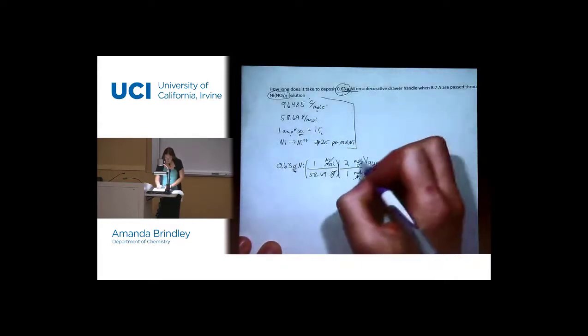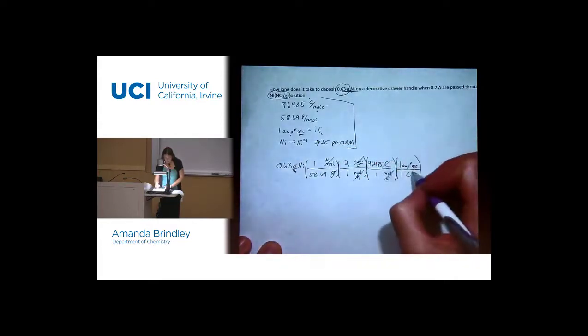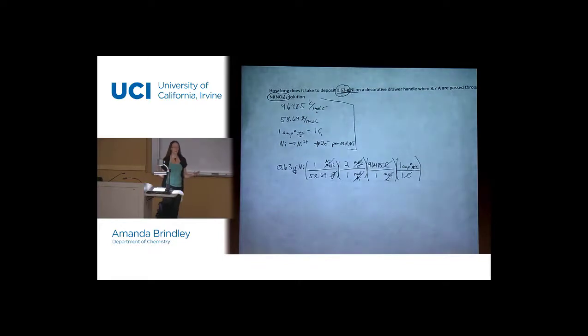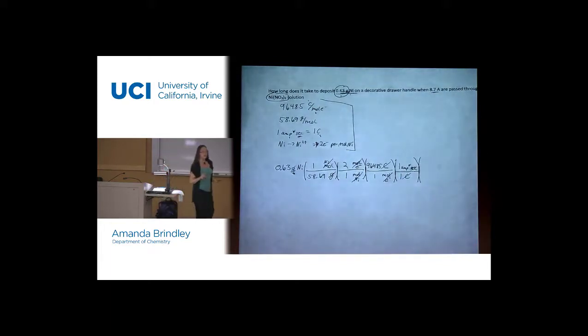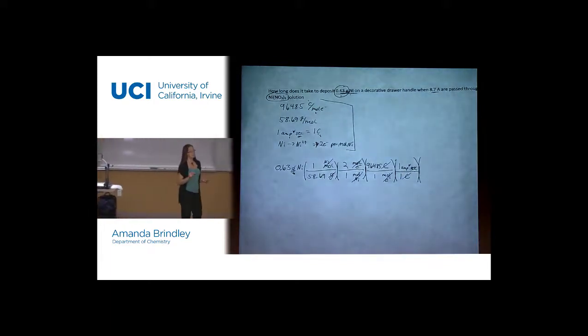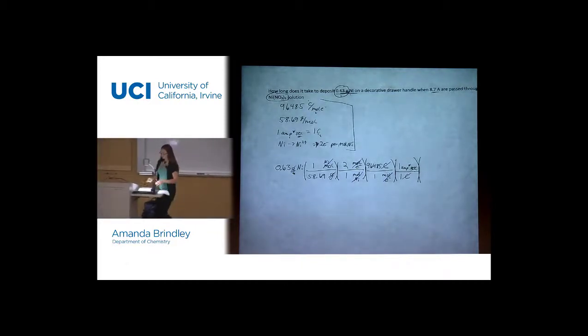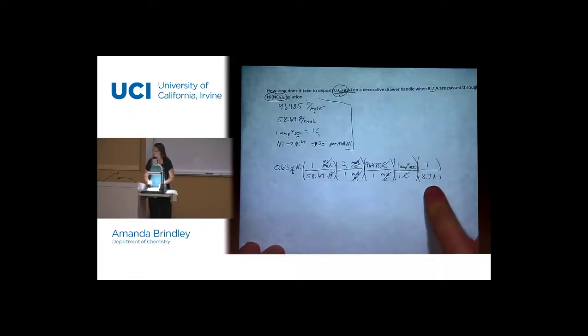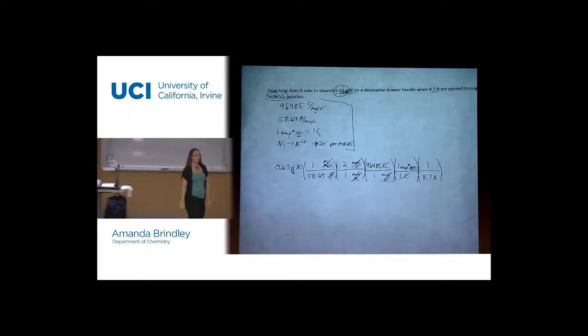Our grams cancel, our moles of nickel cancel, our electrons cancel, our coulombs cancel, and what do we have? Amps times seconds. That's not what we want. We want seconds. So we need to use amps here to get rid of that. Right now, where is amps? Top or bottom? Top. How do you cancel out something that's in the top? You divide it. Not 100% sure why people don't tend to like to do this, but you can. You can always just stick a one there and unitless. It would be the same thing as just saying divide by. So we'll do that.